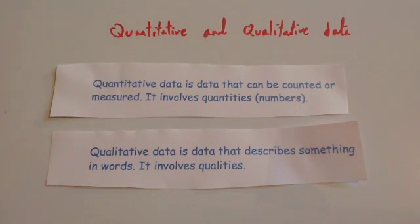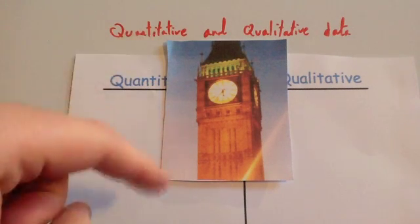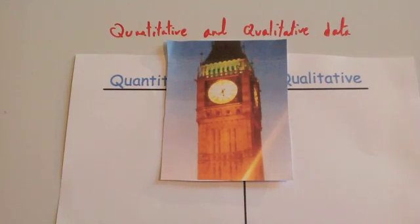So let's have a look at an example. Here we have got the Elizabeth Tower which is sometimes known as Big Ben. But the clock tower itself is called the Elizabeth Tower, and Big Ben is actually the Bell. I've got four statements about Big Ben, the Bell.